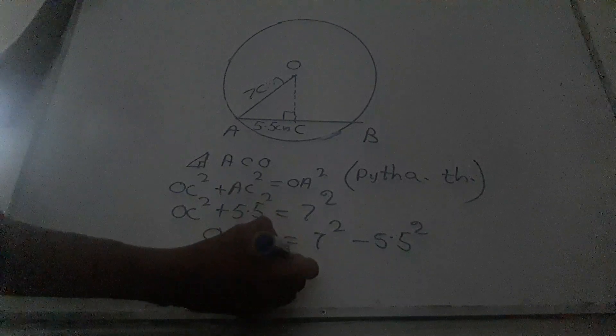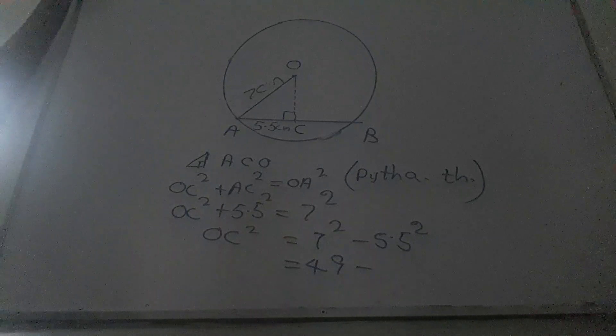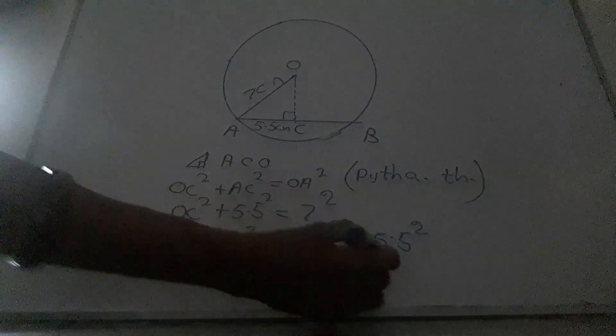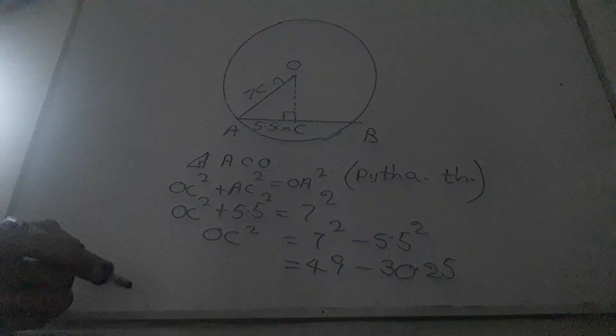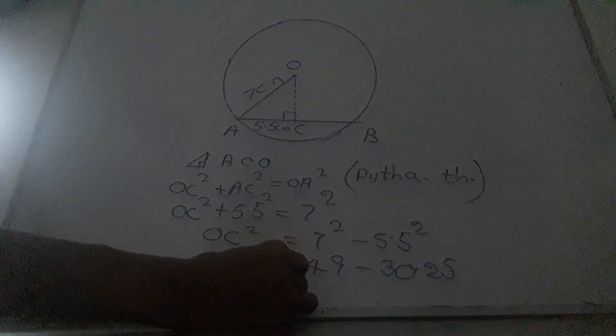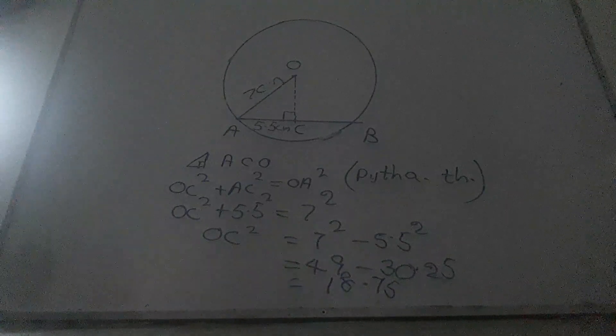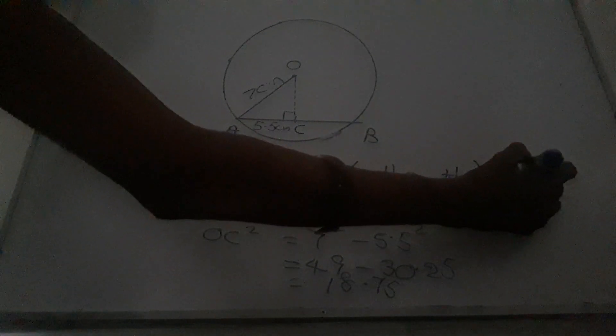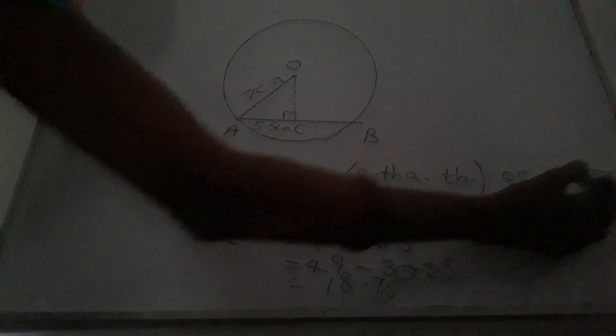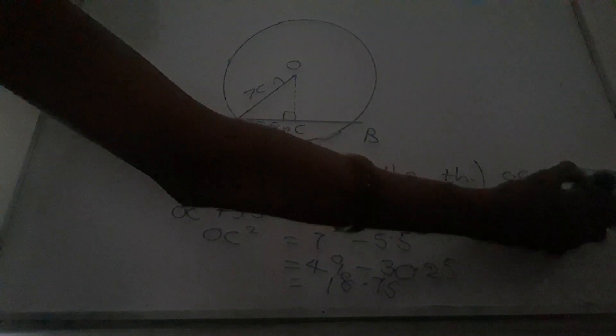OC squared is 49 subtract 5.5 squared is equal 30.25. Subtraction of this is equal 18.75. Length of OC is equal square root of 18.75 is equal 4.33 cm.